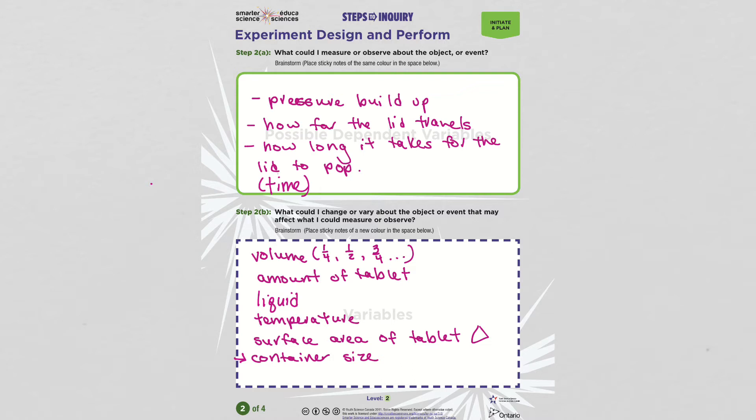So I could change the volume. I could do maybe a quarter full, a half full, three quarters full of the canister. I could change the amount of tablet. I could use a quarter, a half, three quarters, and so on.